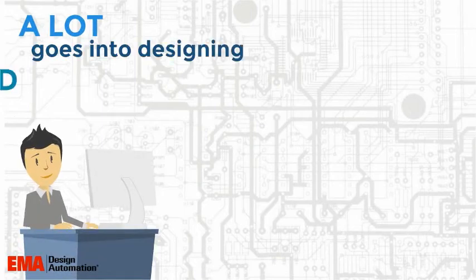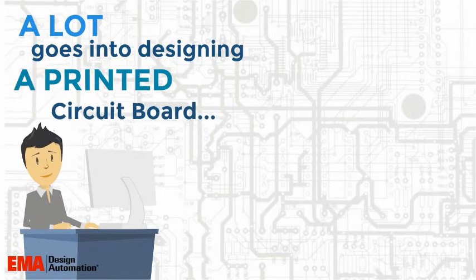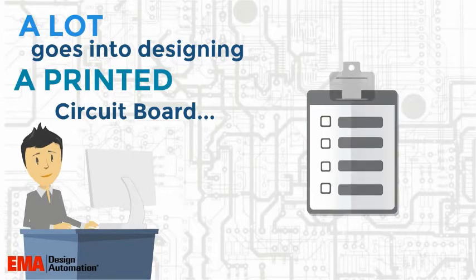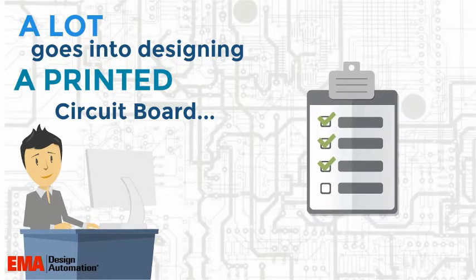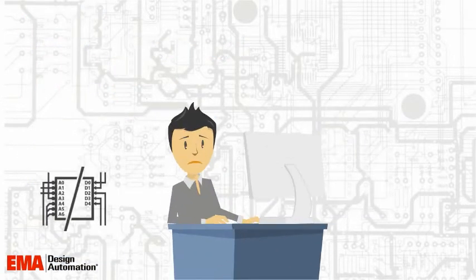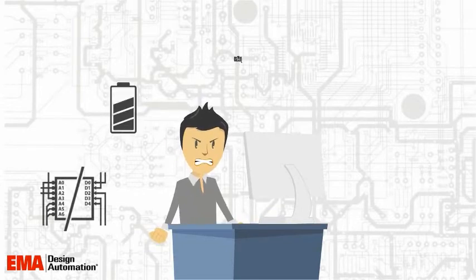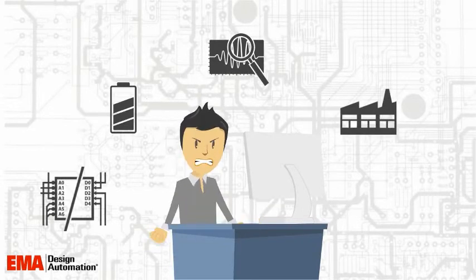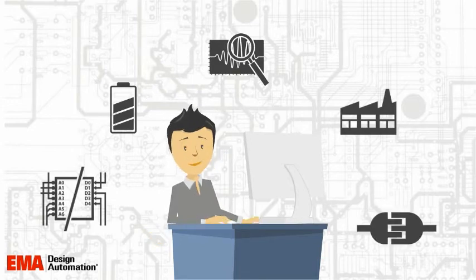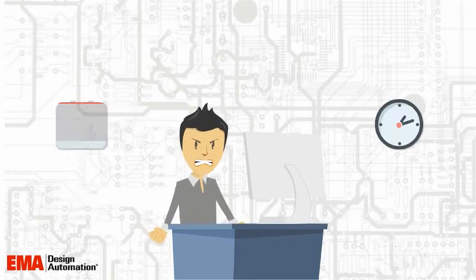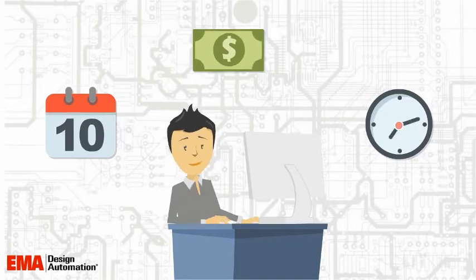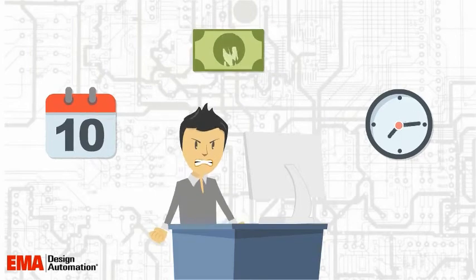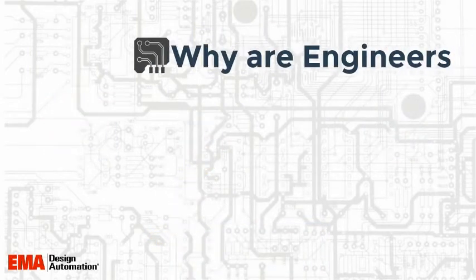A lot goes into designing a printed circuit board. Not only do you have to define, place, and route the design, but you also have to worry about part selection, power integrity, signal quality, manufacturability, as well as mechanical integration, all while hitting your time to market window within your defined product cost targets.